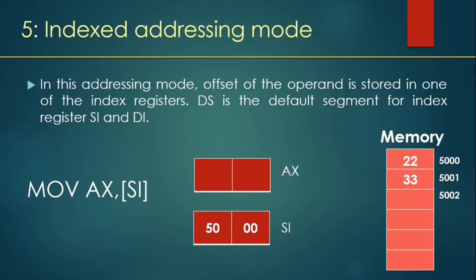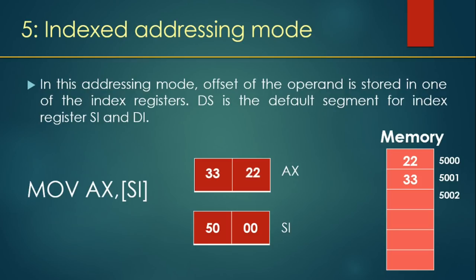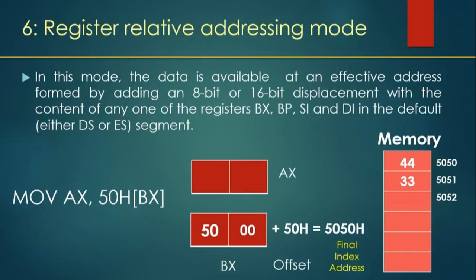Next is indexed addressing mode. In this addressing mode, the offset of the operand is stored in one of the index registers. DS is the default segment for index registers SI and DI. Similar to register indirect mode, but the offset is stored in an index register — SI or DI. In the example MOV AX, [SI], SI is pointing at a memory location and data from that location — from 5000 and 5001 — is copied to the AX register.